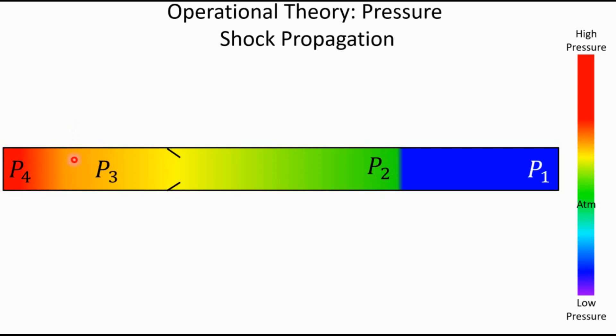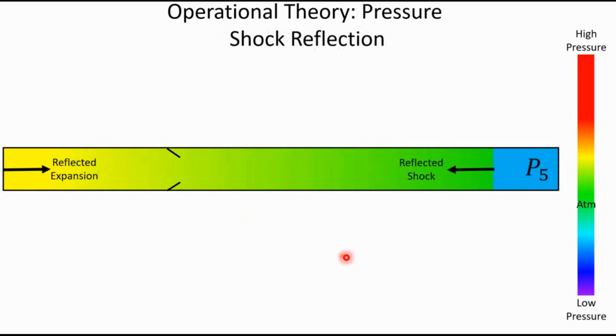So eventually that incident shock reaches the end wall and then reflects back off, and we call that leftward moving shock the reflected shock. And that shock heats the gas at the test section a second time up to what we call P5. So this state 5 here is our test condition.